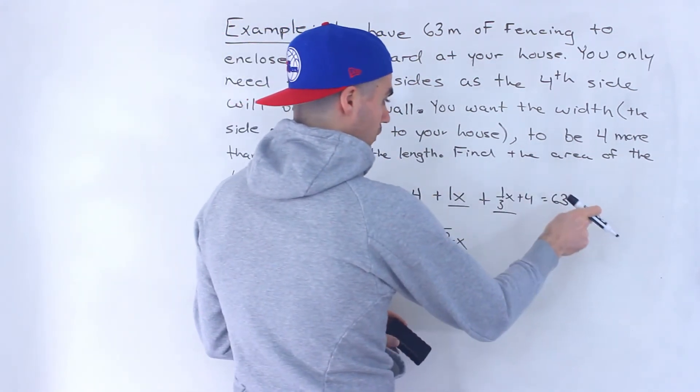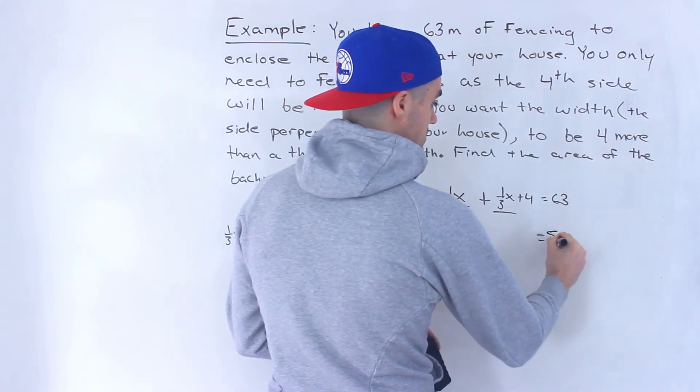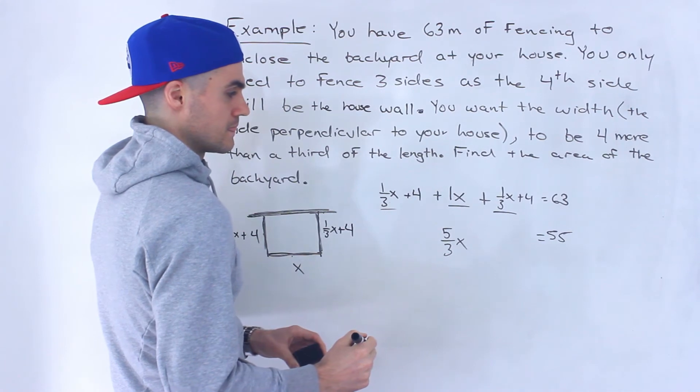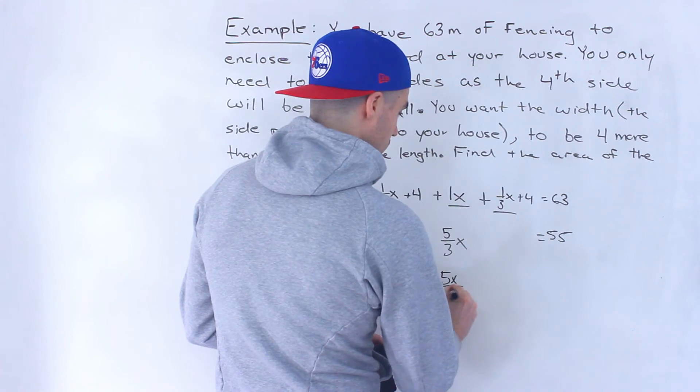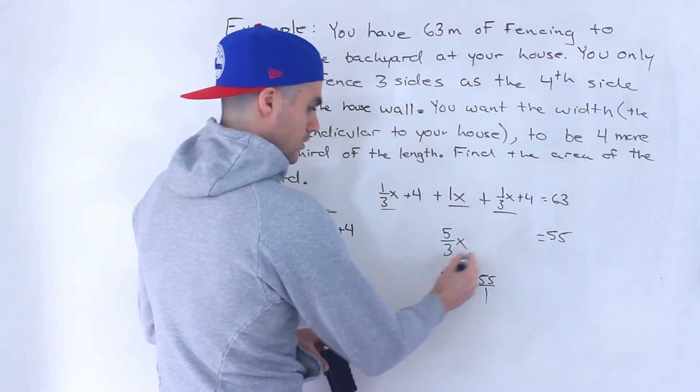Then bring the fours over. So that would be eight, 63 minus eight gives us 55. And now notice we can solve for x. So we could rewrite this, let's rewrite as five x over three equals 55 over one, cross multiply.